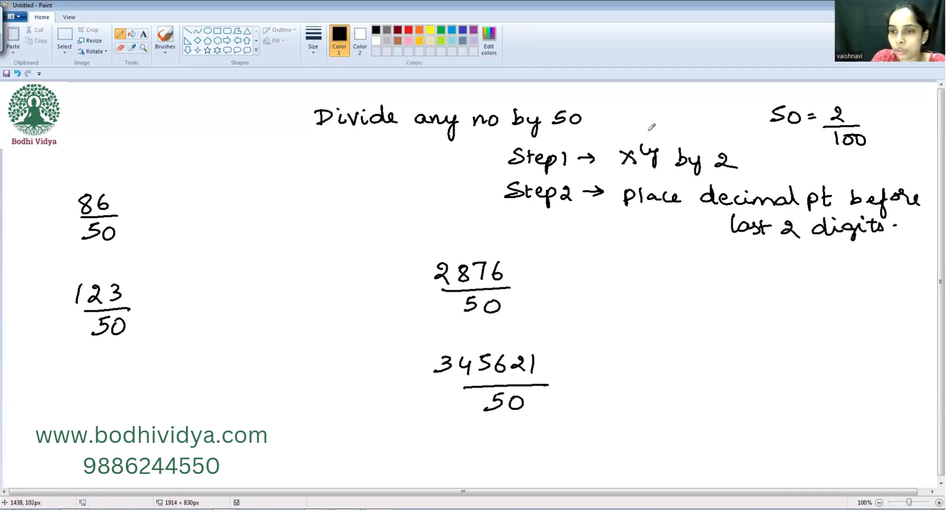Very simple. So whichever number we need to divide, we need to multiply it by 2 and place the decimal point before the last 2 digits.